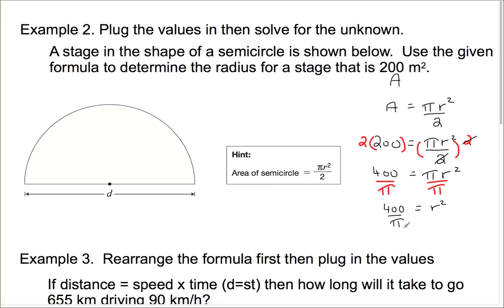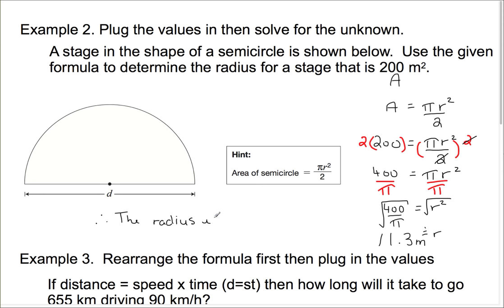I'm not going to actually divide 400 by pi until the very last step. To get rid of a squared in an equation, I take the square root. If I take the square root of that side, I'm left with just r. Whatever I do to one side, I do the same thing to the other, so I take the square root of that side as well. That gives approximately 11.3. That's going to be in meters since our area was given in square meters. Therefore, the radius is 11.3 meters.